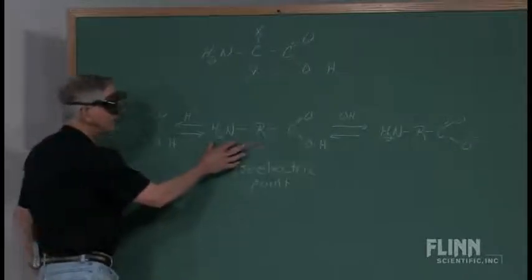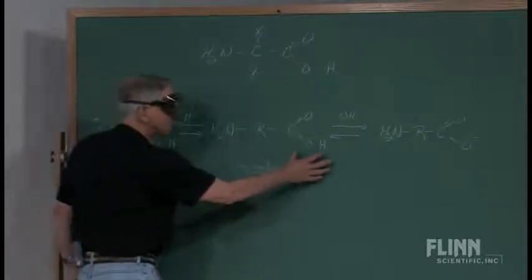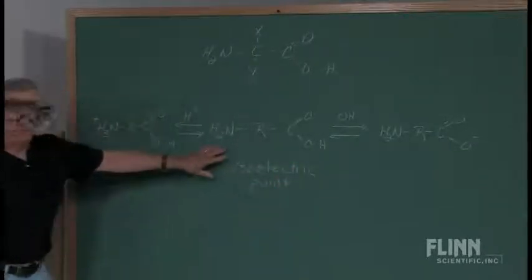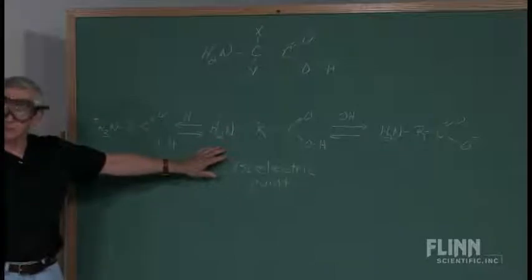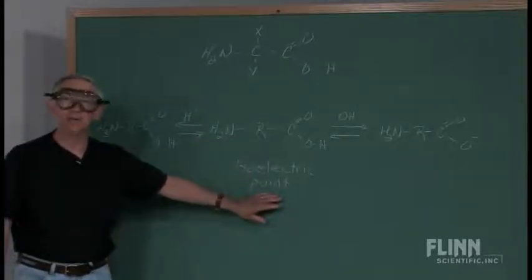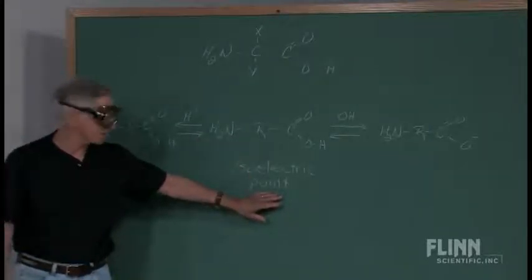If I have just a carboxylic acid at one end and the amino group at the other end, that's referred to as the isoelectric point, and we'll come back to that.